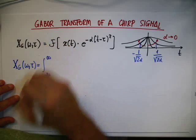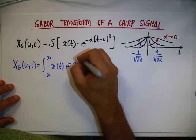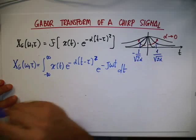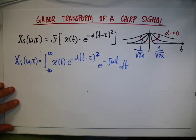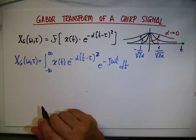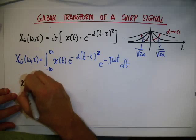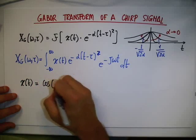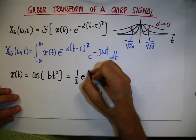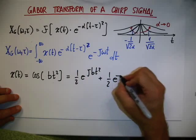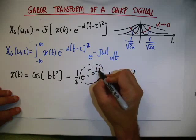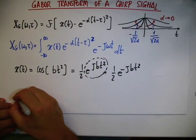The Gabor transform is equal to the integral from minus infinity to infinity of x(t) times e to the minus alpha (t minus tau) squared times e to the minus j*omega*t dt. Now let's consider the chirp signal: x(t) is cosine of b*t squared, which we can write as one half e to the j*b*t squared plus one half e to the minus j*b*t squared. So we'll study the Gabor transform of the complex exponential form.